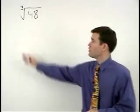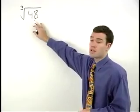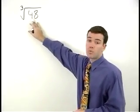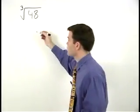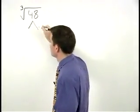To simplify a cube root where the number inside the radical is not a perfect cube, again we start by making a factor tree for the number inside.